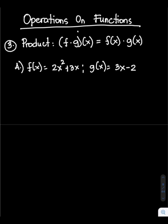Hello everyone, welcome to mathematics tutorial. Today we will continue our discussion about operations on functions — specifically the product. The formula for finding the product is: the quantity of f times g times x equals f of x times g of x.